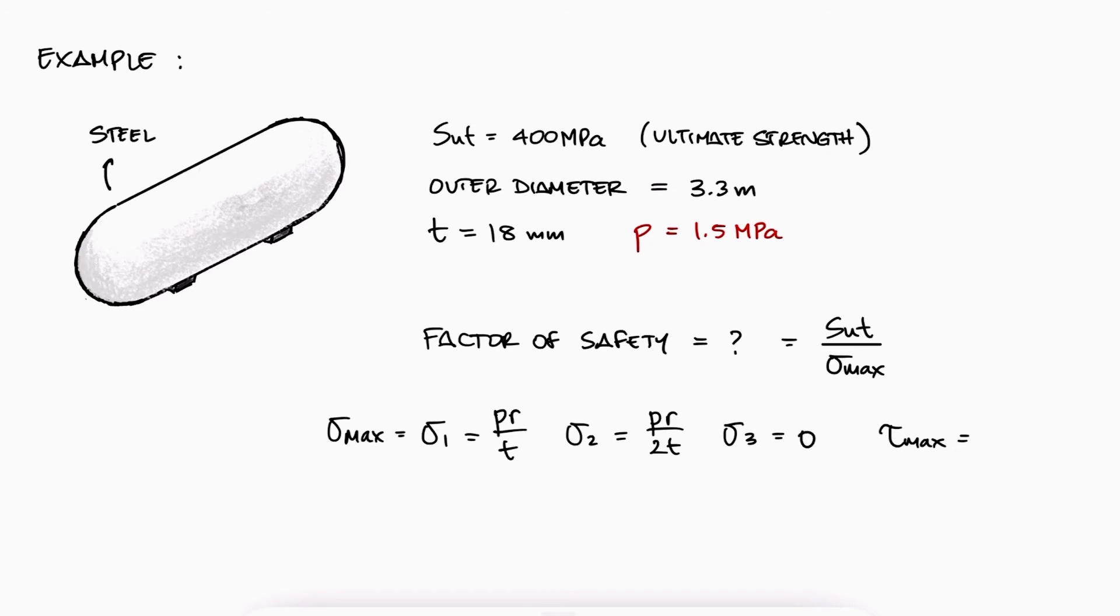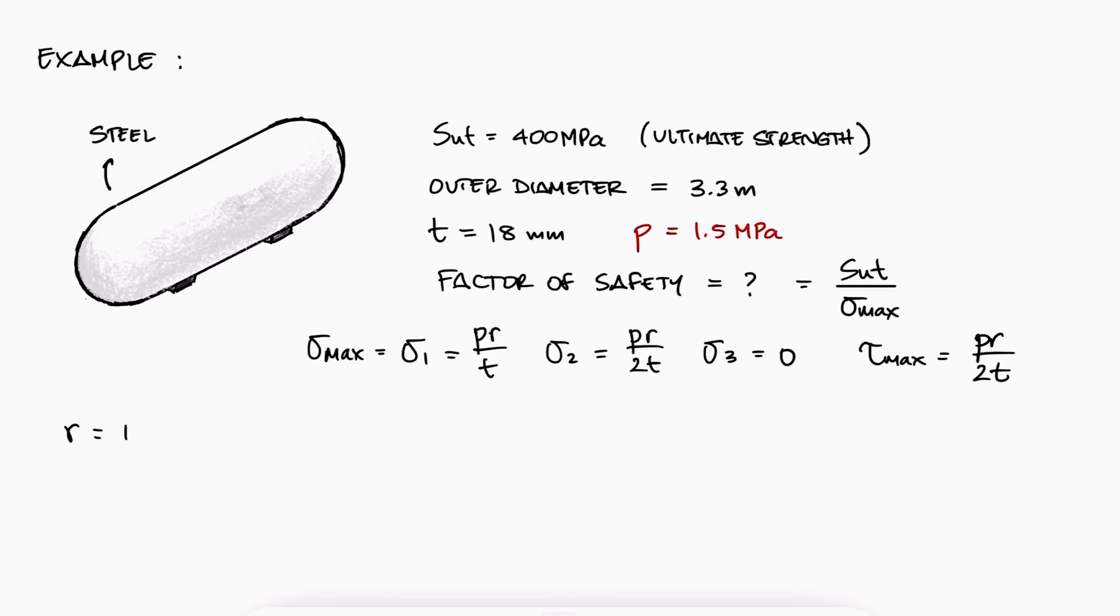From the expressions we developed today, we know that we need to calculate the radius R, which like it was pointed out at the beginning of this video, refers to the inner radius, not the outer radius. Since the diameter that we were given is the outer diameter, we'll divide this into 2 to find the outer radius and subtract one thickness value t.